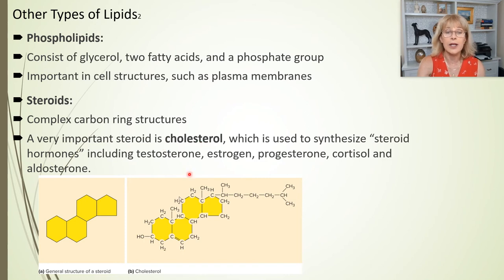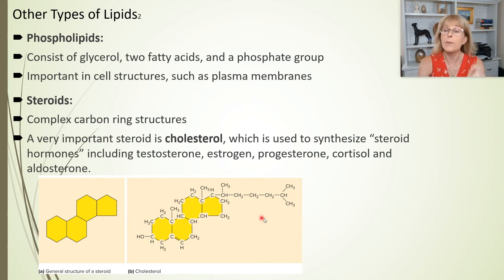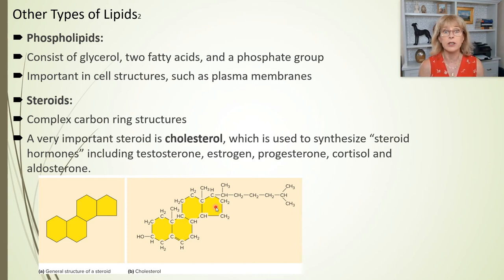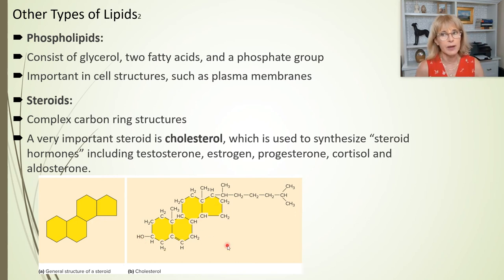A very important steroid is cholesterol. All of the steroid hormones like testosterone and estrogen and the others we will learn about when we get to the endocrine system — they are all made from molecules of cholesterol. You may know someone who has high levels of cholesterol. The cholesterol in our bloodstream is actually being made by our body, and the reason our body makes it is because it needs to. Cholesterol is used to stabilize your cell membranes and also as the starting molecule for building all of these hormones. We'll come back to that later.